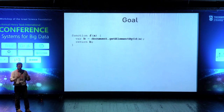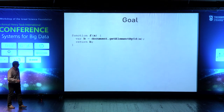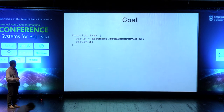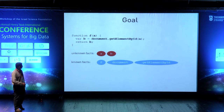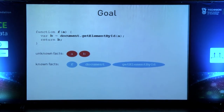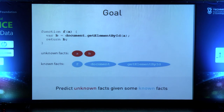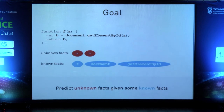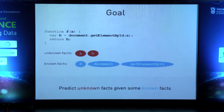I'm going to use JS Nice as an example because it is easy to illustrate the concepts, but they're very generally applicable. Here is a program where some of the variable names are obfuscated — they're very short, they're minified. I'm going to use red to denote variable names whose values we would like to predict, and blue for the known facts — this may be the API that the program calls, the name of the object, and so on. The core problem is: how do you predict facts that are unknown given the known facts? You can phrase many problems in that way — JS Nice is just one example.